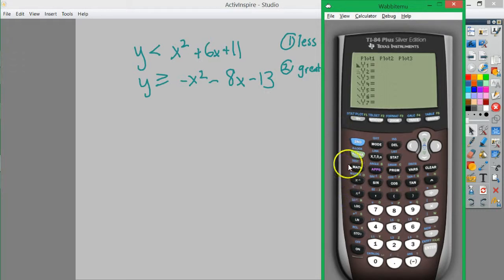There's that. And then there's a greater than, and I'm going to go ahead and do that. And then I'll type in x squared plus 6x plus 11. And then below, I'll type in negative x squared minus 8x minus 13. And then while I make sure that everything looks normal.